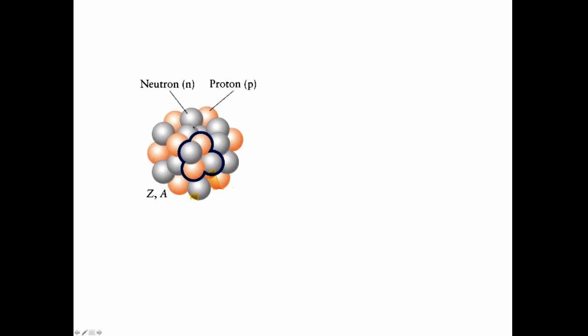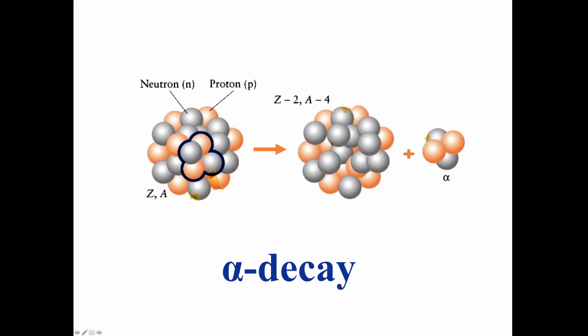Here's what it looks like in general terms. A nucleus consists of a number of protons and neutrons. Highlighted here are two protons and neutrons in this nucleus. When alpha decay occurs, what ends up happening is the two protons and two neutrons that make up the alpha particle are emitted. And the nucleus that's left behind, which is called the daughter nucleus of the original parent nucleus, is smaller.